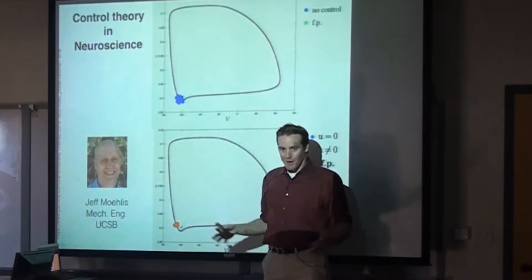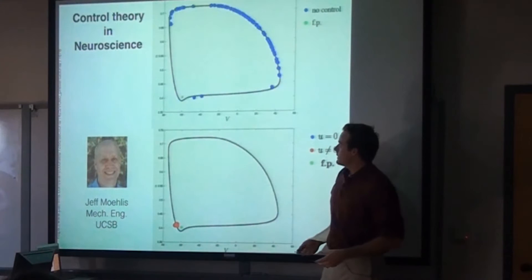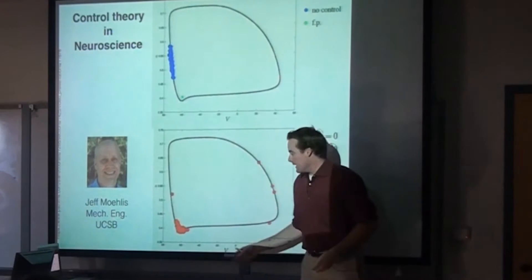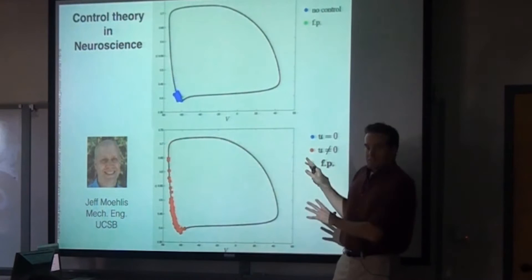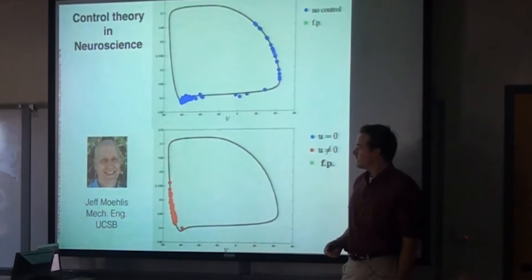He said: maybe if we knew the states of the neurons and had a model for how the neurons spike around this limit cycle, maybe we could perturb them in a way that would disrupt them, making them not fire synchronously. When it's red, that's when he's applying the input voltage to disrupt the synchrony of the neurons. They're not all firing all at once now — they're a bit more spread out. This seems like a really cool kind of overlap between control theory and neuroscience.